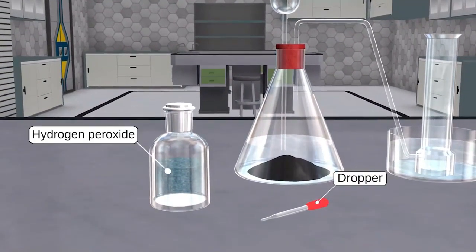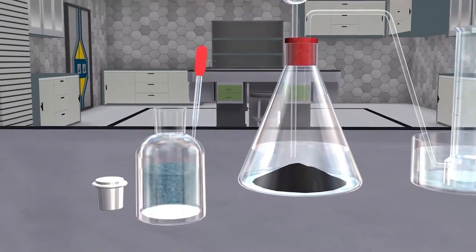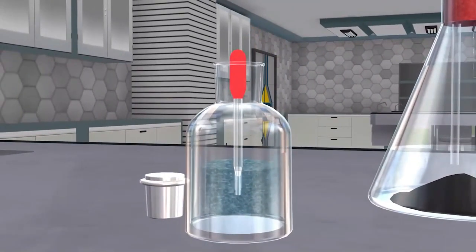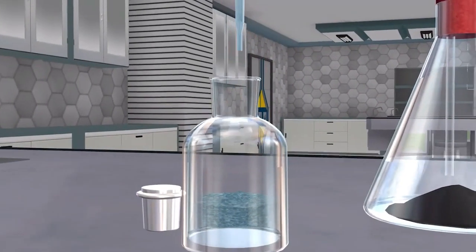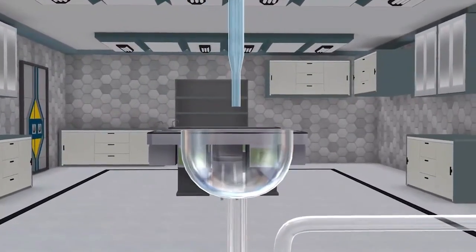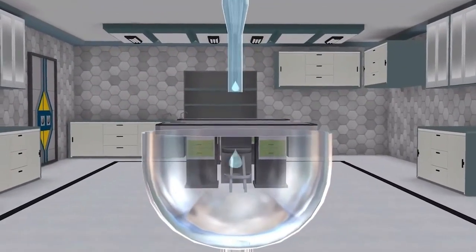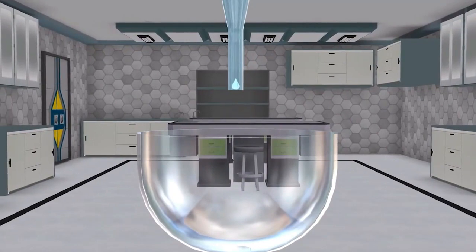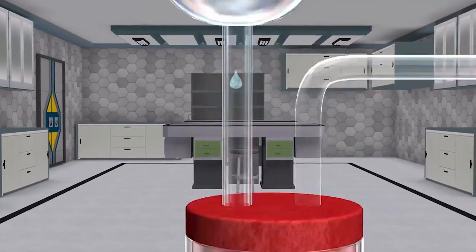First, we will measure out an appropriate amount of manganese dioxide and hydrogen peroxide and place them in the mixing container. It is important to follow the correct proportions to ensure a successful reaction. Next, we will mix the reactants together, making sure that they are well combined.